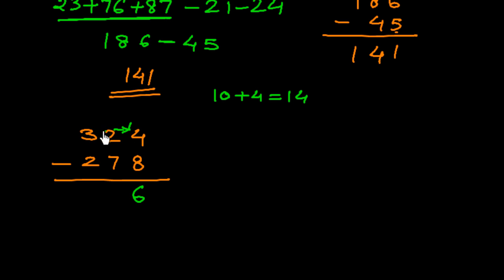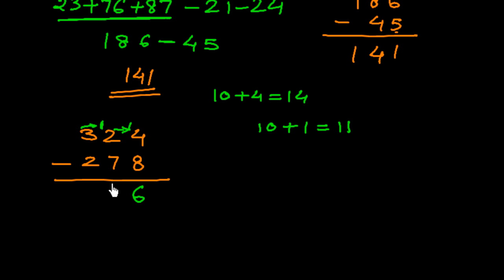After borrowing, the tens place now has 1 instead of 2. Since 1 is smaller than 7, we borrow again from the hundreds place, giving us 11. Then 11 minus 7 is 4. In the hundreds place we now have 2 minus 2, which is 0. So the answer is 46.